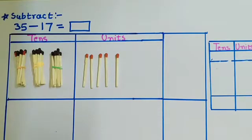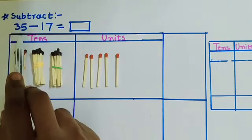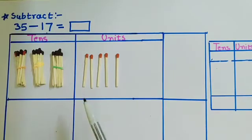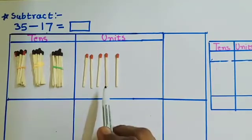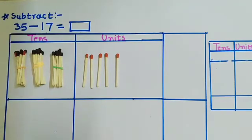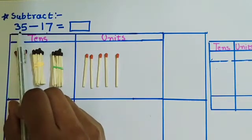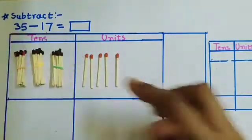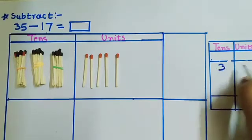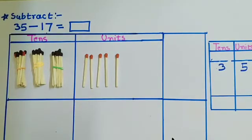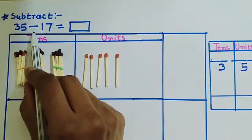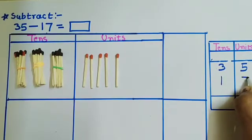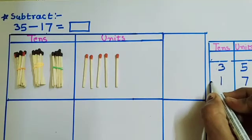We will take the help of this sum to understand the concept again. Here we have the question: subtract 35 minus 17 equals how much? To solve this we are taking the help of math sticks. We have to subtract 17 from 35, so we will write 35 in the proper column. In 35 we have 3 tens and 5 units, and we have to subtract 17 — which is 1 ten and 7 units — and put the sign of subtraction.